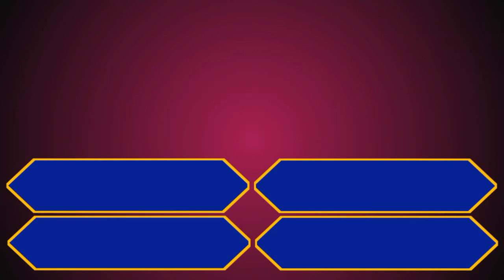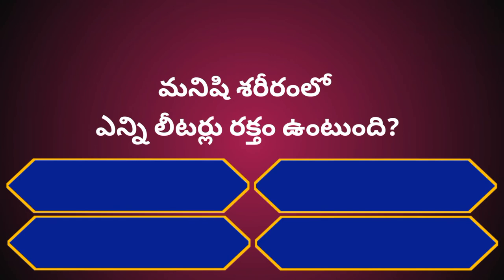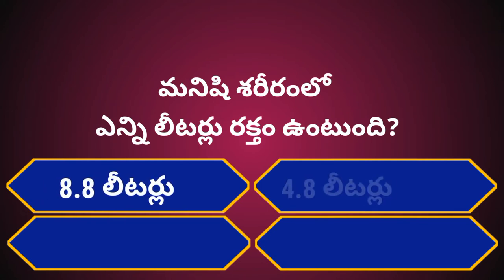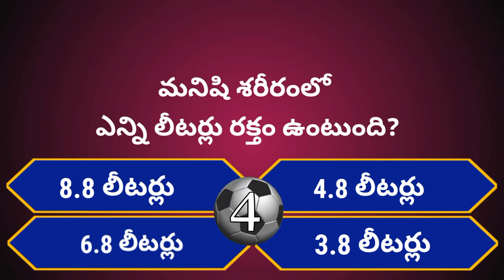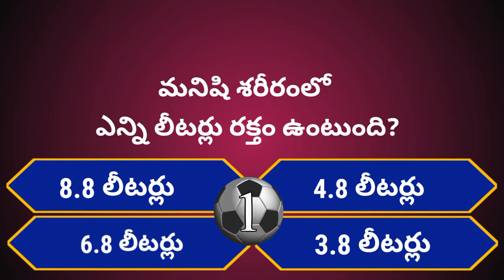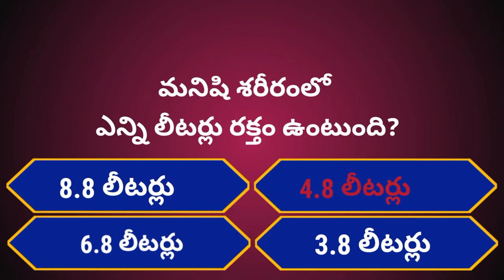Question number 6. Manishishariram lho 80 liter l raktham untu undi. Options: A. 80.80 liter l, B. 4.80 liter l, C. 6.80 liter l, D. 3.80 liter l. Your time starts now. Correct answer is B. 4.80 liter l.